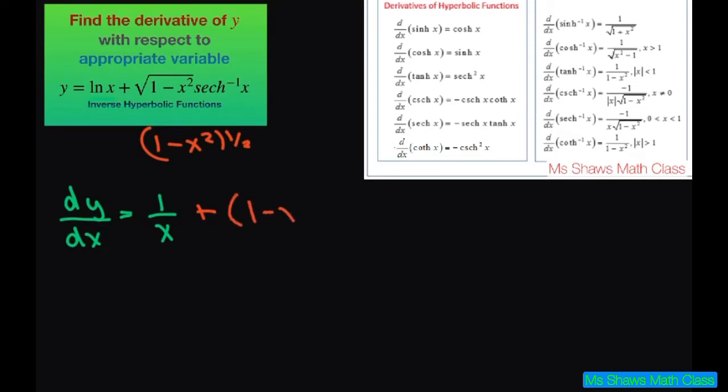1 minus x squared to the 1 half power. And then we're going to differentiate our inverse hyperbolic secant. So that's going to be times negative 1 divided by, I'm just copying this down, x times the square root of 1 minus x squared.